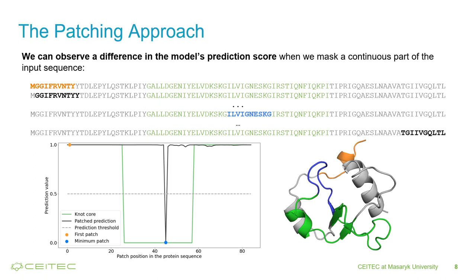To obtain the desired information, we propose to use a patching technique. Our hypothesis is that if we mask the part of the original input sequence that is responsible for the knotting, the prediction score of the model for such modified input should drop from knotted to unknotted. We use the X character for masking because it is already present in the tokenizer of the model and it stands for an arbitrary amino acid. In practice, we calculate the predictions for each sequence by moving the patch from left to right, and then we take the overall minimum in the prediction score. We used different patch sizes for each protein family based on how long the sequences and knot cores are on average.